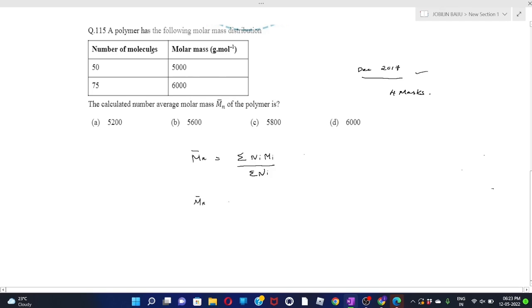MN is given by N1 M1 plus N2 M2 divided by N. In the numerator we can write 50 multiplied with 5000, after that we have to add plus 75 multiplied with 6000. In the denominator, 50 plus 75. Sum of the number, 50 plus 75 we just have to add both, 125, and so it will be 5600.